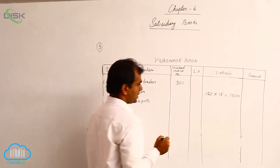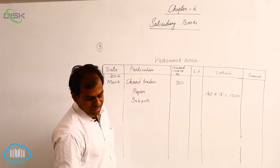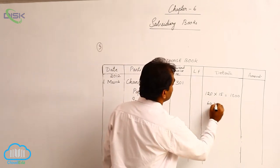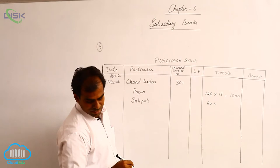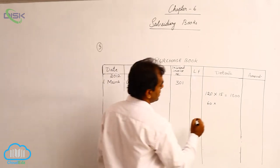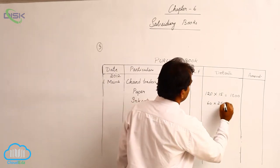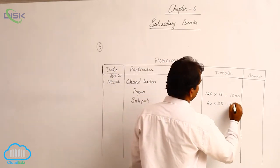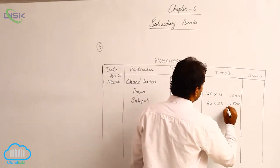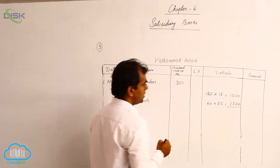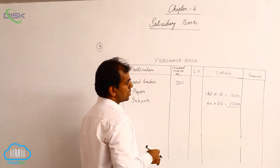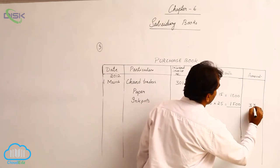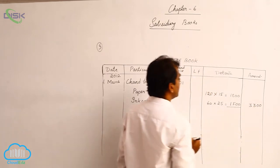Then next, we are also buying 60 dozen ink pots at the rate of 25 per dozen, so it would come to 1500. Okay. So the total purchase is coming to 3300. This is how you show it.